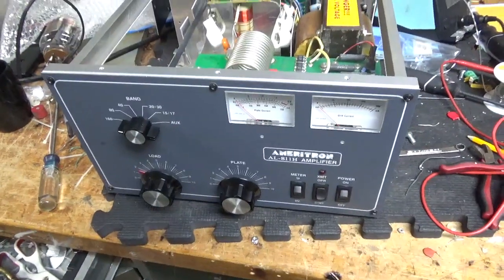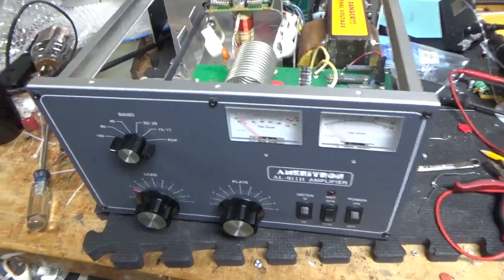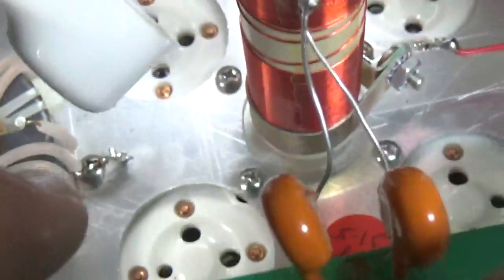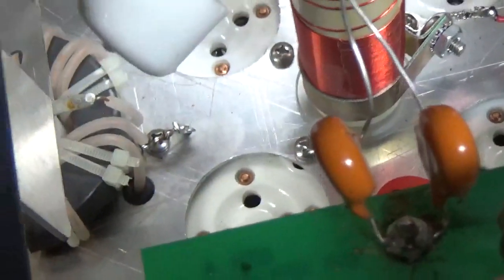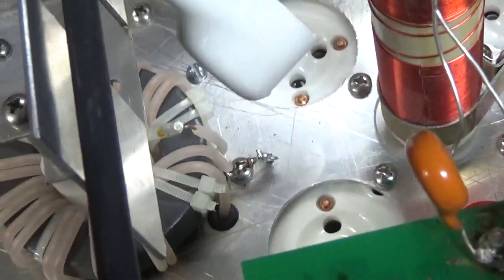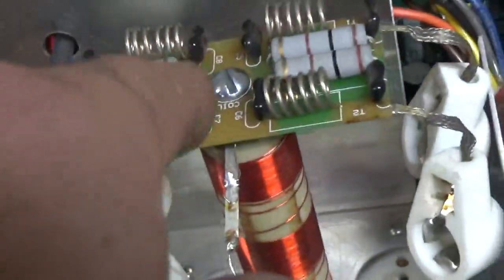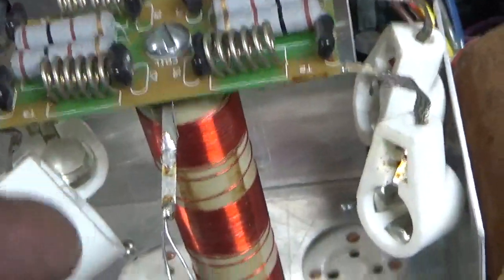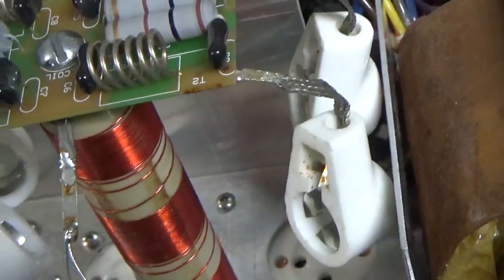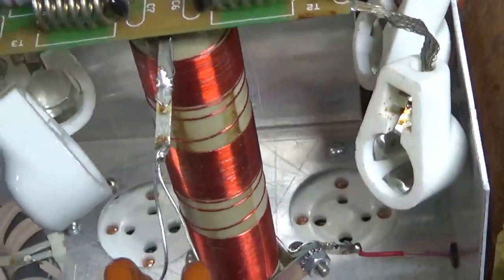Okay, so I'm back with the completed Ameritron AL-811H. You can see the transformer is now soldered to the ring terminal for the neutralization circuit. Put the proper screw in on the top, longer screw in the base of the plate choke. So that's all set.